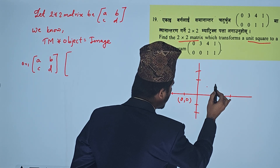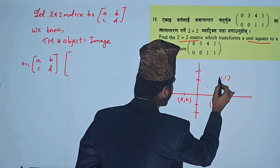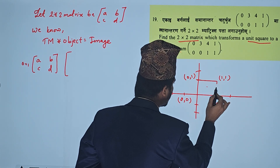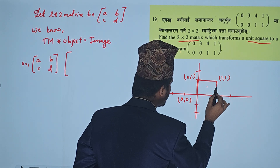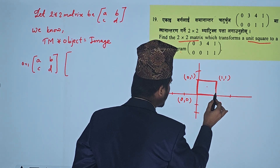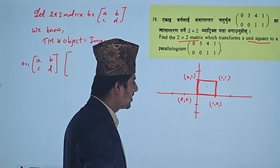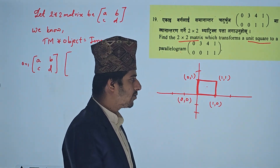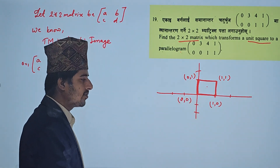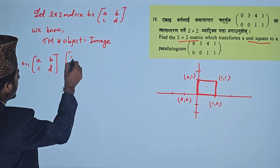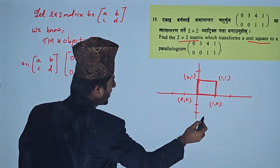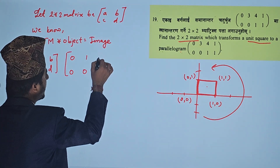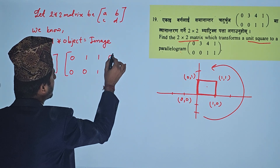So, 1, 0, 1, 1 and 0, 1. This is the unit square matrix. The 4-unit square matrix has coordinates 0, 0.